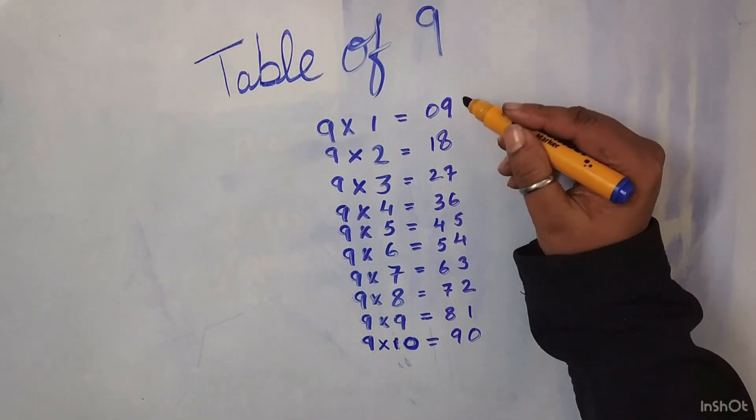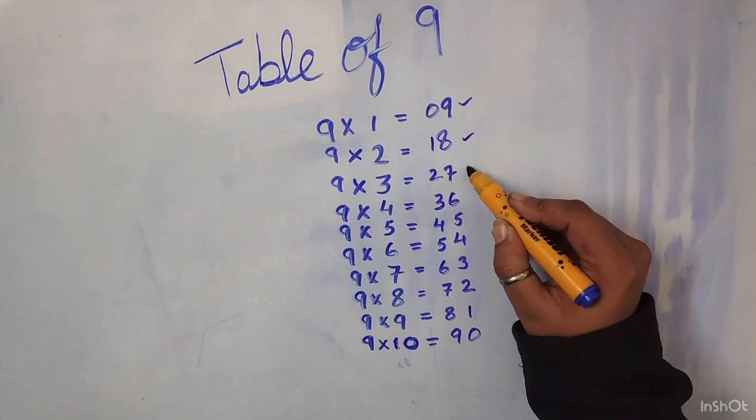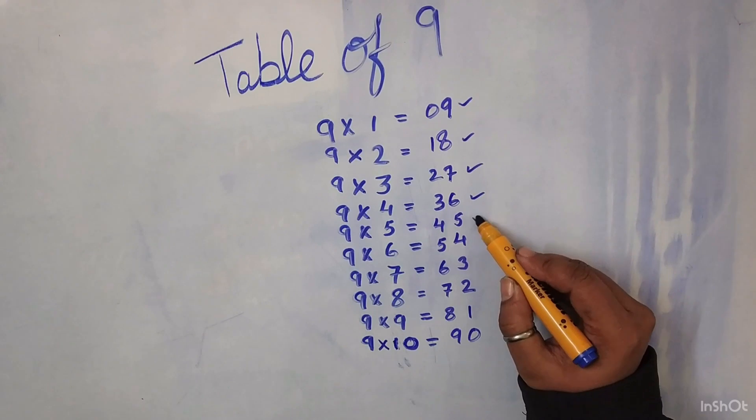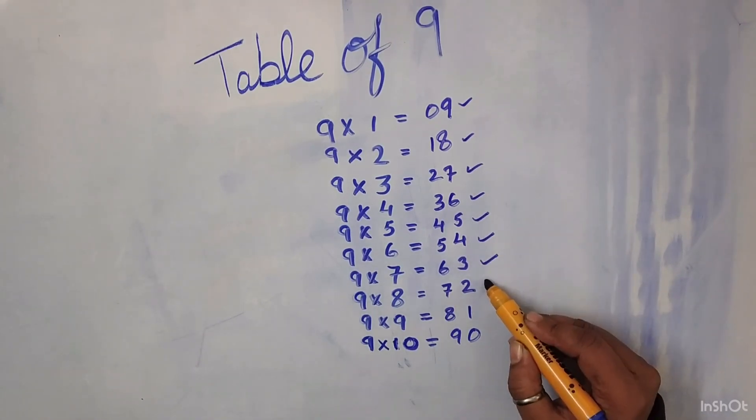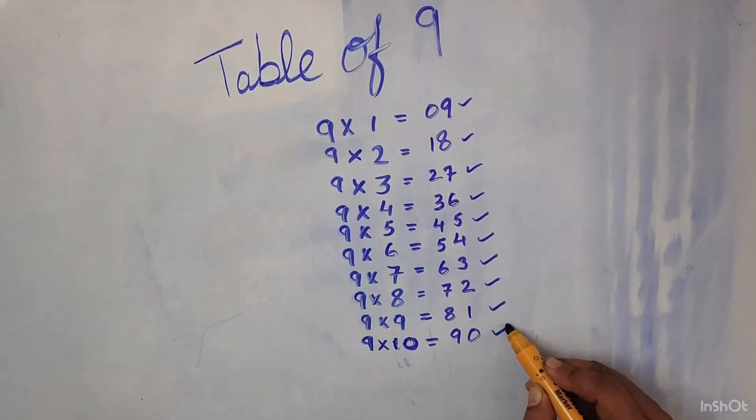9 1's are 9, 9 2's are 18, 9 3's are 27, 9 4's are 36, 9 5's are 45, 9 6's are 54, 9 7's are 63, 9 8's are 72, 9 9's are 81 and 9 10's are 90.